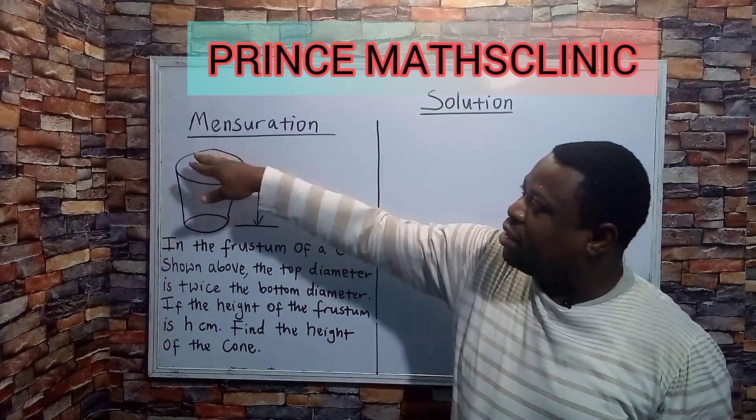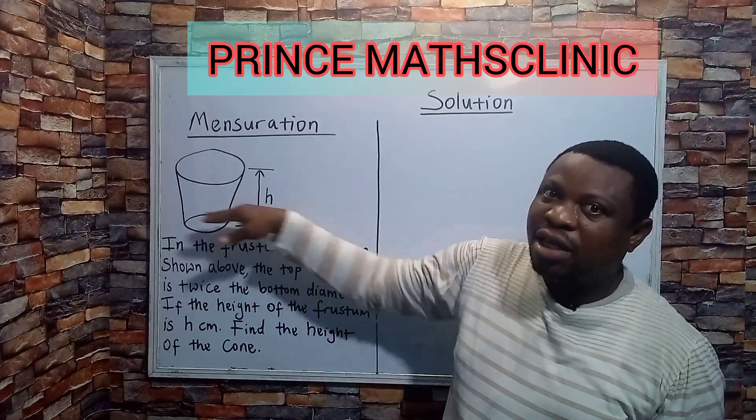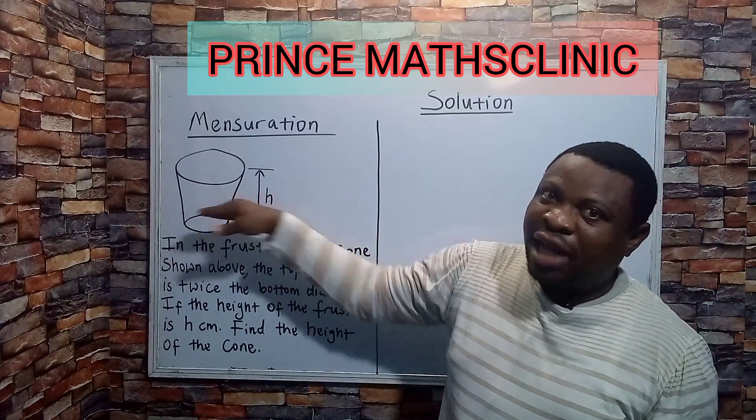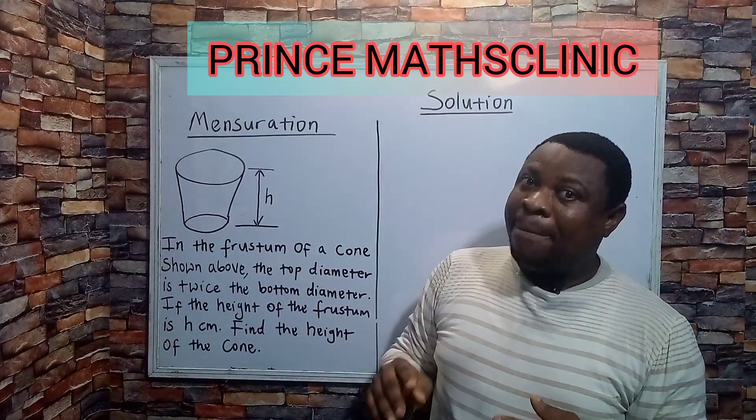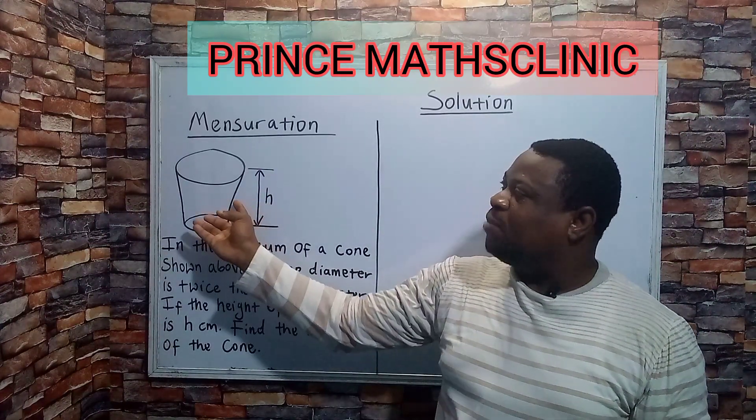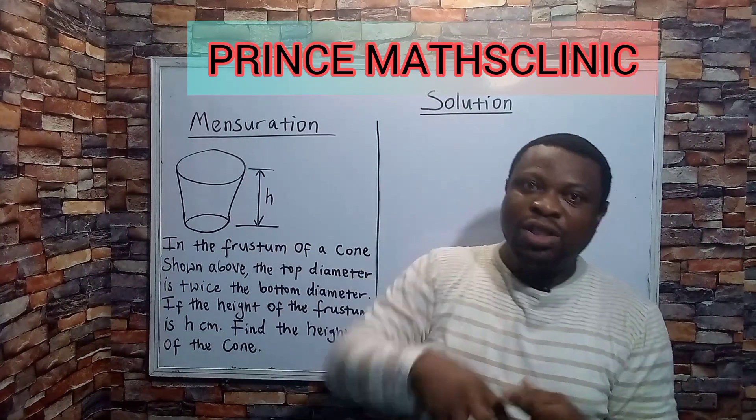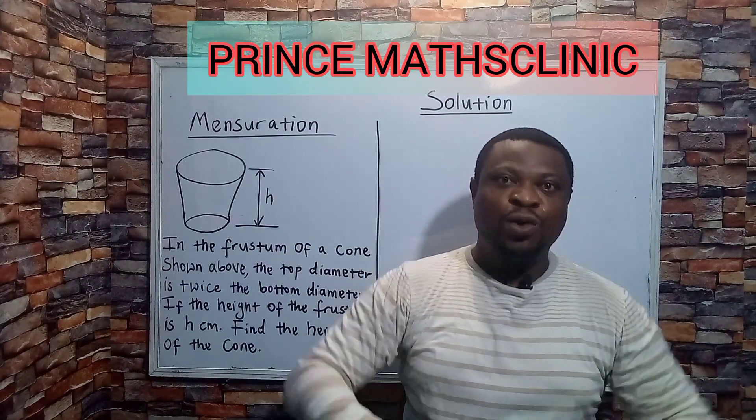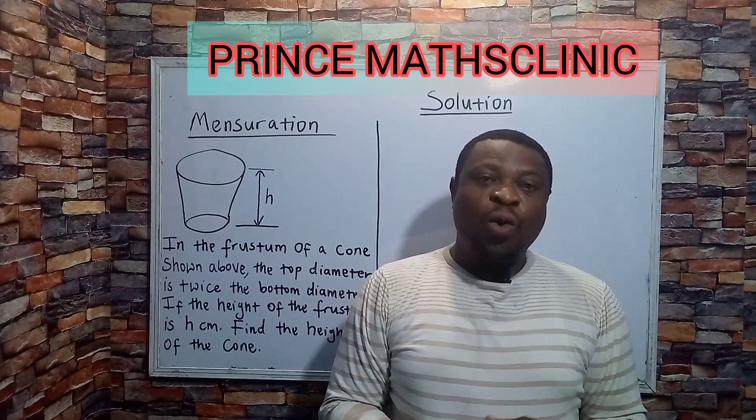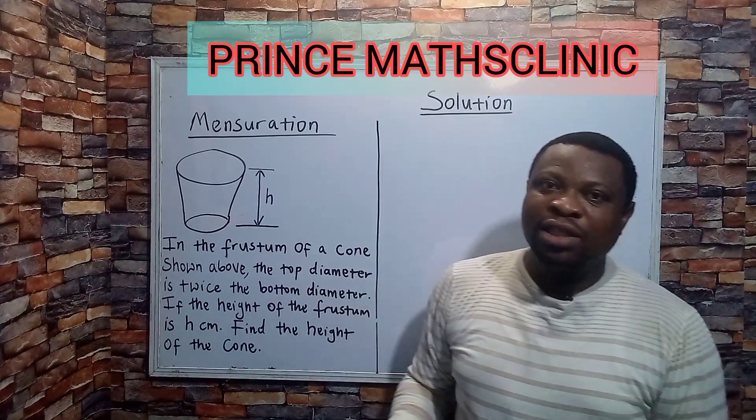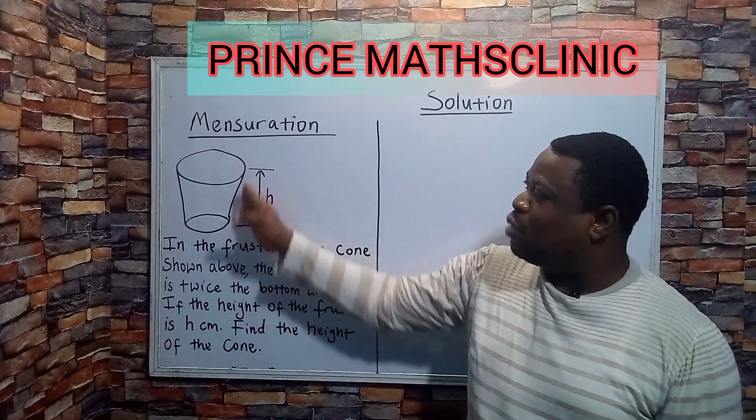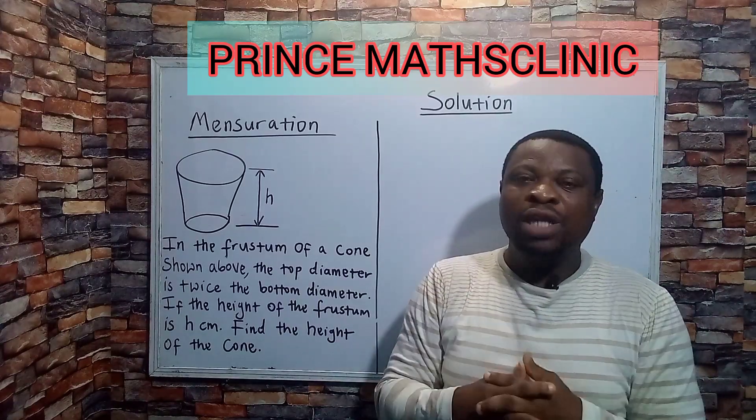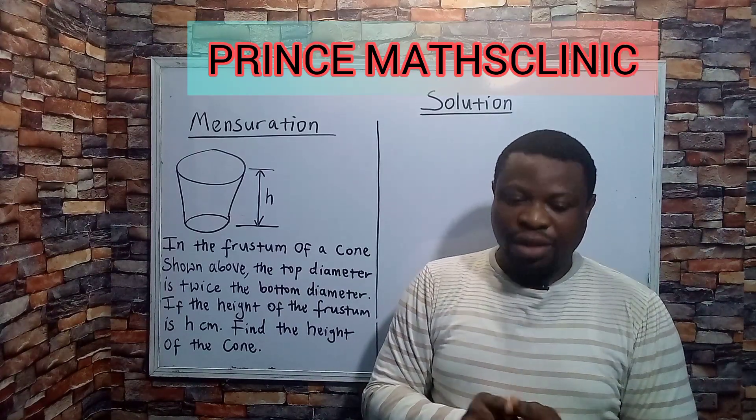So when the base and the piece that is being cut off are parallel, that portion that has been cut off from the main cone itself is called a frustum. So the question now is that we want to find the height of this particular cone when it is still whole, when it is still one.